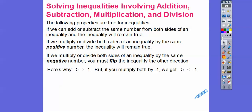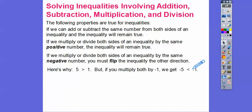Here's an example. Can you see that 5 is definitely greater than 1? But if you multiply both sides by negative 1, it gives you negative 5 and negative 1. And negative 5 is less than negative 1 — it's to the left of negative 1 on the number line. Whichever one's to the left is the smaller number. So when you multiply or divide by a negative number, you flip that sign and it goes in the other direction.